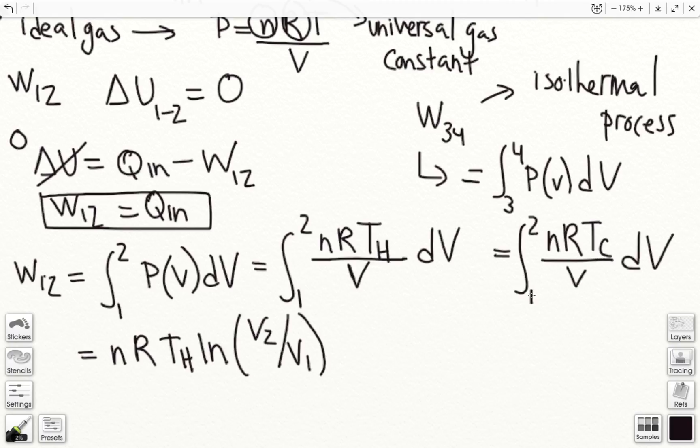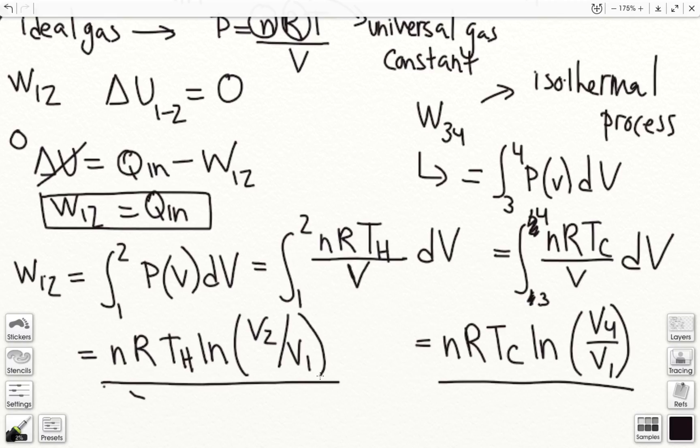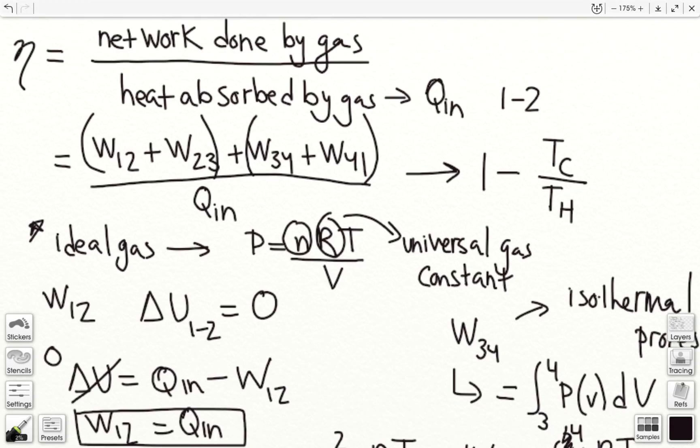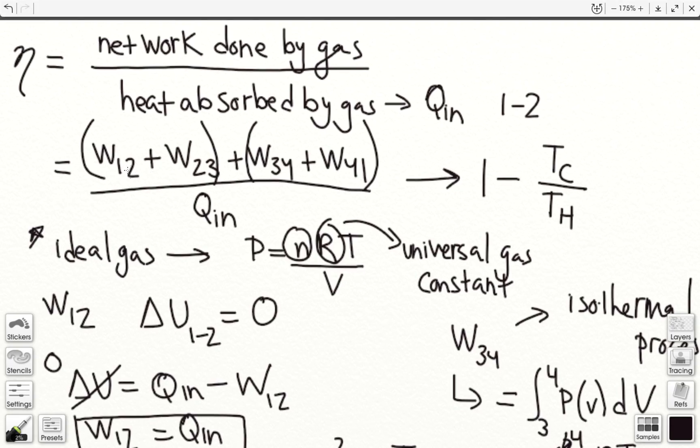Sorry, this should be a 3, this should be a 4. And now this simplifies to n, r, t, c, ln, v4 over v3. Okay, so now we have expressions for the work from 1 to 2 and the work from 3 to 4.